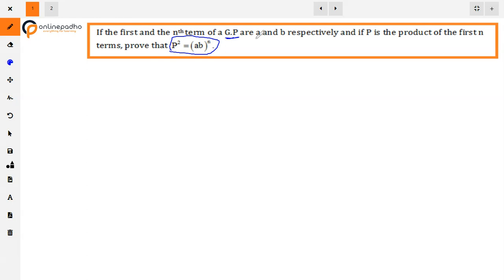We have a GP where the first term and nth term are given. First term is given as A and nth term, that is AN, is given as B. First, let's suppose that the common ratio of this GP is R.